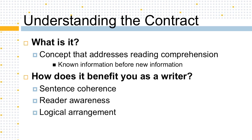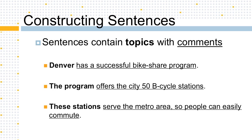But in order to really grasp the Known New Contract, we must first consider the basic elements of any sentence. Let's take a look at these three sentences. We can think of sentences as containing topics with comments, as we can see in these examples. The topics here are Denver, the program, and these stations. And each sentence provides comments on those topics.